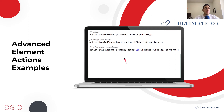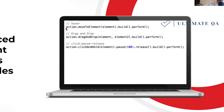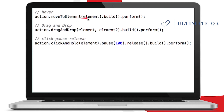Here are code examples. For a hover, you create an actions object, call moveToElement passing in your target element, build the action, and perform it. For drag and drop, you use the dragAndDrop method provided by Selenium, passing in element one as source and element two as target, then build and perform. For a click-pause-release, you click and hold an element, pause for a specific interval, release the click and hold, then perform the operation. Remember: nothing happens until you call perform on the fluent API chain.